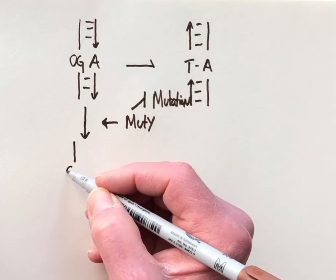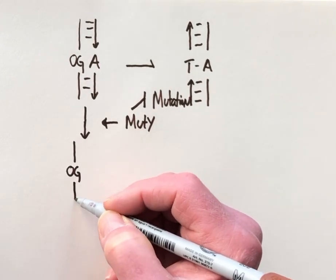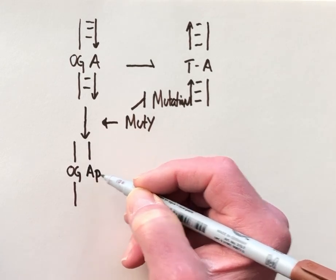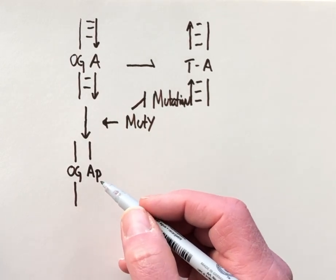And the immediate product of MutY is to create an apurinic, apyrimidinic site, so an AP site.